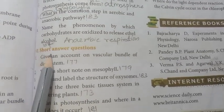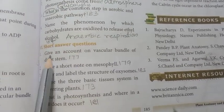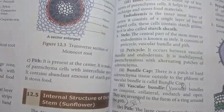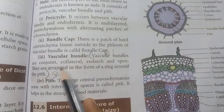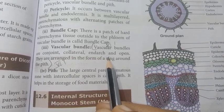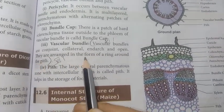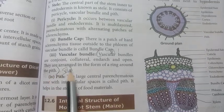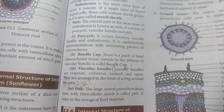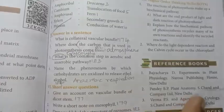Roman number six: short answer questions. First: Give an account of the vascular bundle of dicot stem. Refer page number 177. The vascular bundles are conjoint, collateral, endarch, and open. They are arranged in the form of a ring around the pith.